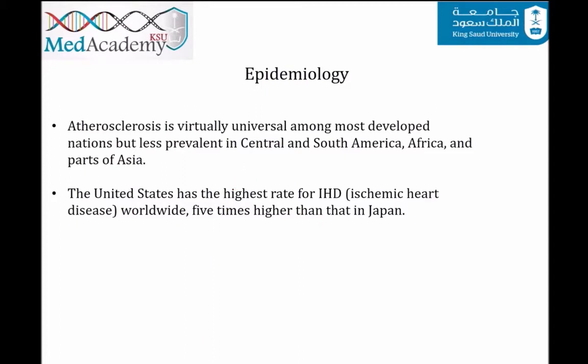The United States has the highest rate of ischemic heart disease worldwide, five times higher than that in Japan. However, Japanese immigrants who go to the United States and adopt American lifestyle and dietary customs acquire the same atherosclerosis risk as US-born persons, emphasizing the important role of environmental factors.